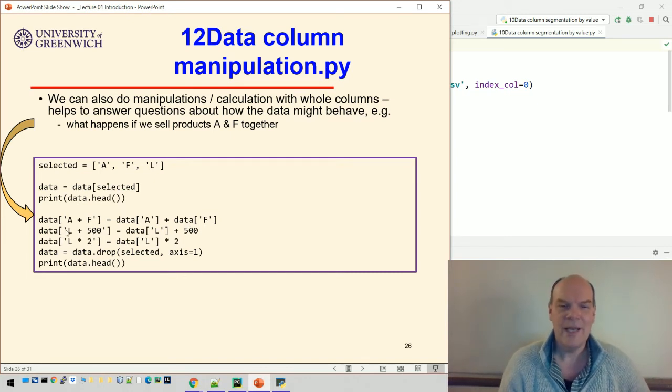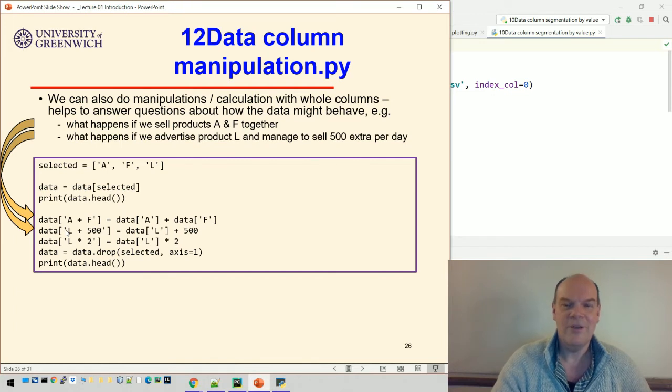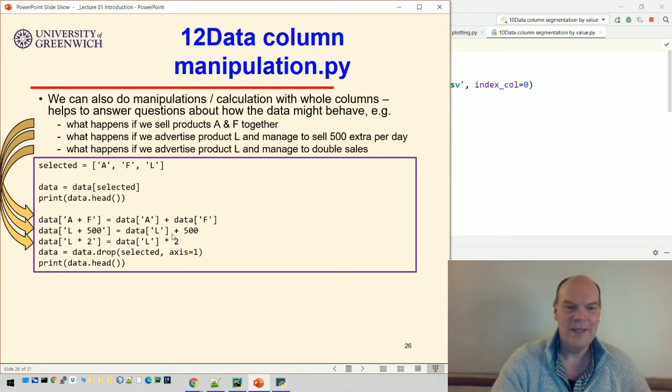Or we can say, well, suppose we managed to sell an extra, we did some advertising, managed to sell extra 500 product Ls every day, albeit that would be significantly good advertising. We can create a column called L plus 500, and that will show us what that looks like. Or what if we advertise product L and we managed to double the sales, we can create a column called L times 2, and then take column L and multiply it by two.